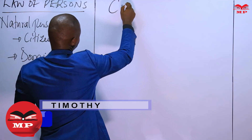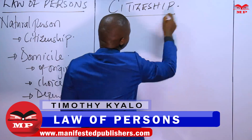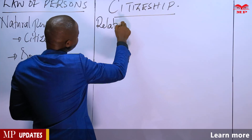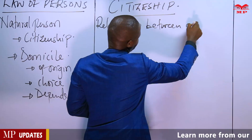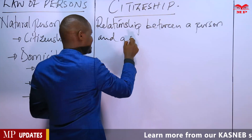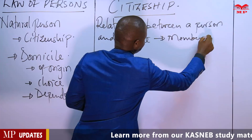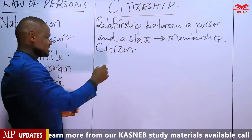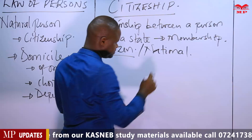Let's look at citizenship. Citizenship, also known as nationality, refers to the relationship between a person and a state, and this is one of membership. This is the relationship of belonging, so that if a person belongs to a particular state, then we say that person is a citizen or a national of that particular state.